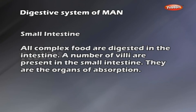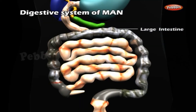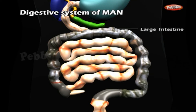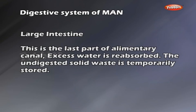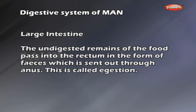The large intestine is the last part of the alimentary canal. Excess water is reabsorbed. The undigested solid waste is temporarily stored. The undigested remains pass into the rectum in the form of feces, which are sent out through the anus. This process is called egestion.